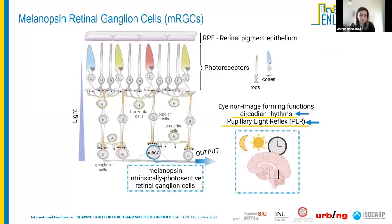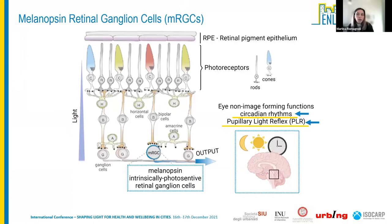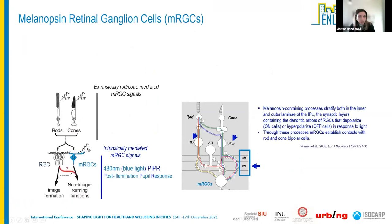Some basic concepts about melanopsin retinal ganglion cells: these cells mediate non-image-forming functions, predominantly including circadian rhythms and the pupillary light reflex. Photo-entrainment of circadian rhythm to the light-dark cycle is regulated by connections from the eye through melanopsin RGCs to the suprachiasmatic nucleus of the hypothalamus. mRGCs are fundamental for the pupillary light reflex through projections to the olivary pretectal nucleus. These cells contain melanopsin photopigment, which is maximally sensitive to blue light around 480 nm.